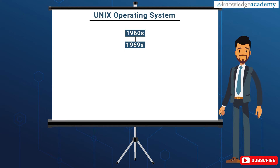Then, Ken Thompson teamed up with Dennis Ritchie, the author of the first C compiler. They both wrote the Unix kernel in C. This was indeed a big step forward in terms of portability of the system, and they released the 5th edition of Unix to universities in 1974.